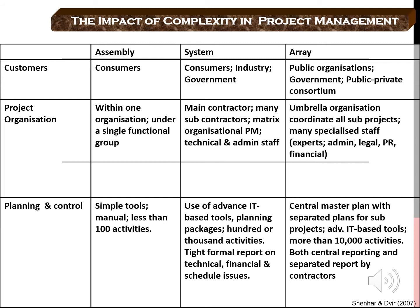That is why we need an umbrella organization to coordinate all separate projects. Similarly, planning and control activities differ across project types. In assembly projects, we can use simple planning and control tools that cope with fewer than 100 activities. In system projects, we need more advanced information technology-based tools to deal with hundreds or thousands of activities, and must be able to issue many different reports — technical, financial, and scheduling reports for different subsystems.